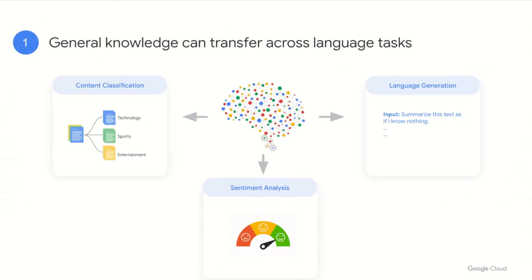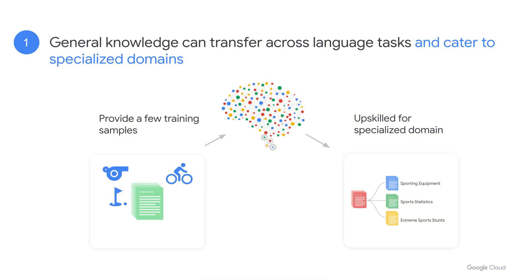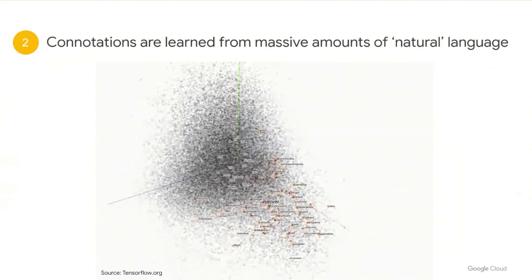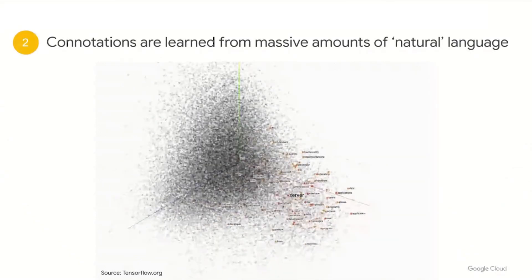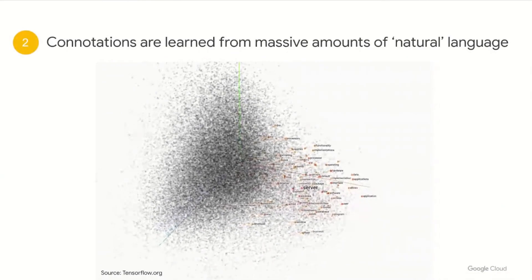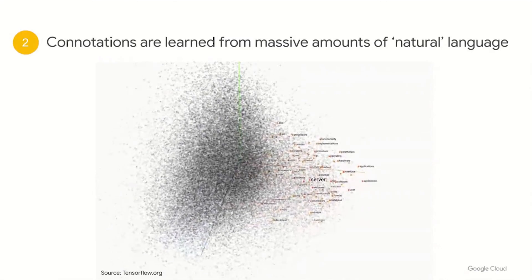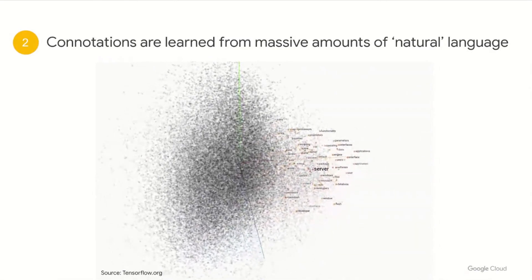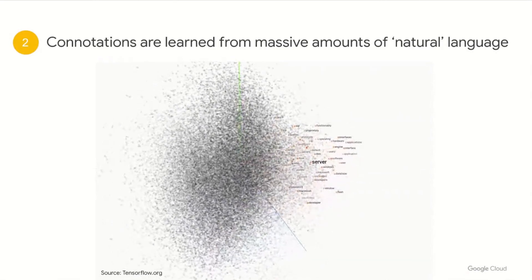First, one general model can transfer its knowledge across specific language tasks. The deep pre-trained knowledge can also be used as a base to cater to specialized domains. You provide just a few samples and the model will be upskilled for, say, sports data. In other words, we can fine-tune for specialized classification while retaining its prior knowledge. Secondly, linguistic connotations are learned from massive amounts of natural language in the data it's exposed to, as you can see in the sample of neural embeddings. The idea is to measure similarity to better inform predictions. The more representation we get, the more performant.